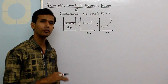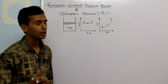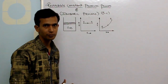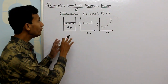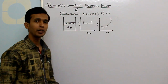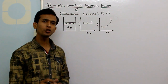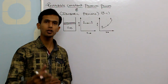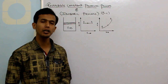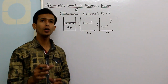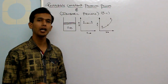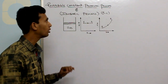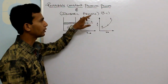In the previous video, we studied the constant volume process. Today, we are going to study the constant pressure process. The process which is carried out in such a way that the pressure of the system remains constant throughout the process is called a constant pressure process, also called an isobaric process.